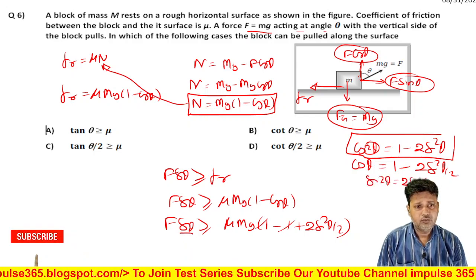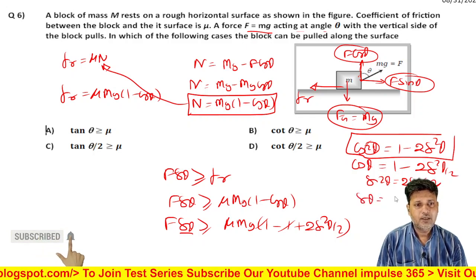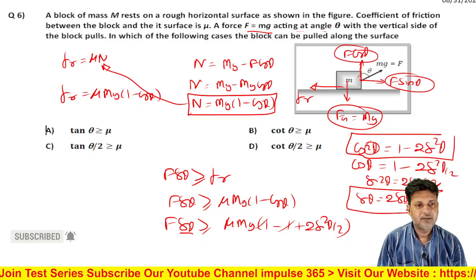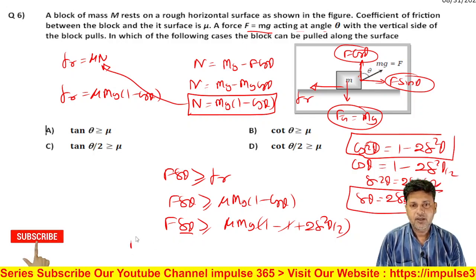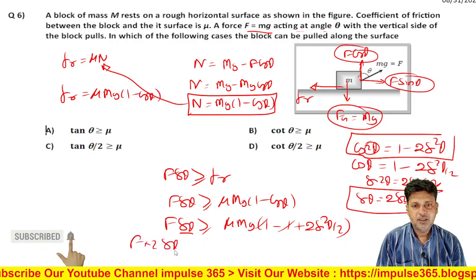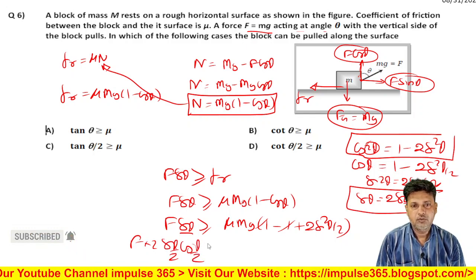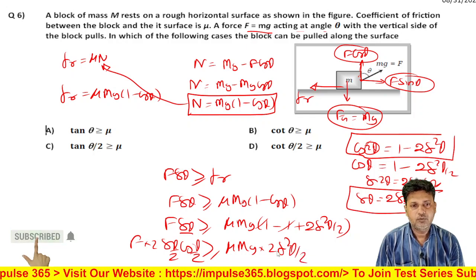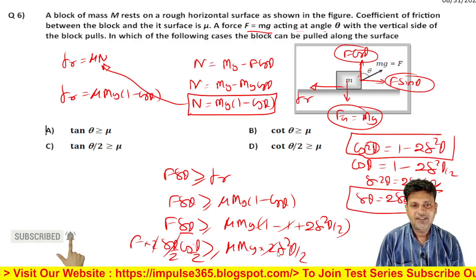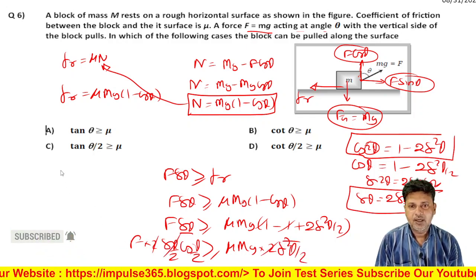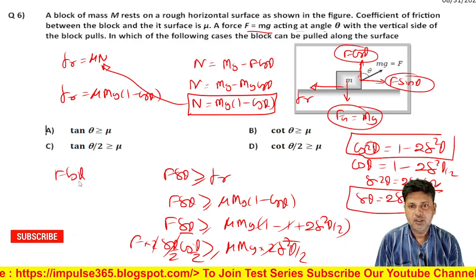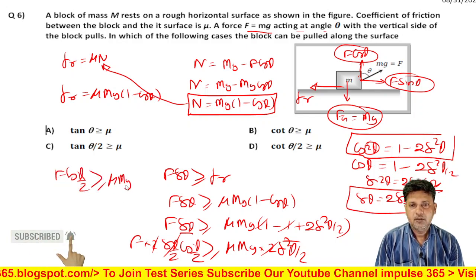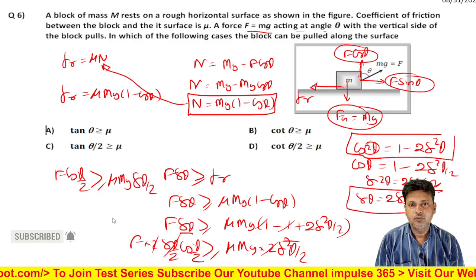Also, sin 2 theta equals 2 sin theta cos theta, so sin theta can be written as 2 sin(theta/2) cos(theta/2). Substituting these: F into 2 sin(theta/2) cos(theta/2) is greater than or equal to mu mg into 2 sin squared(theta/2). Cancelling the factor of 2 on both sides gives F cos(theta/2) greater than or equal to mu mg sin(theta/2).